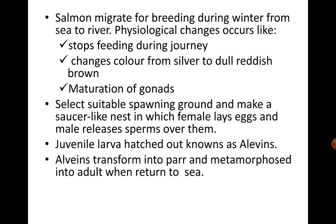Salmon migrate for breeding during winter from sea to river. Physiological changes during this migration include: they stop feeding when on the way to the freshwater habitats; colour changes from silver to dull reddish-brown; maturation of gonads takes place, preparing them for spawning. Once they reach the fresh water grounds, they select a suitable spawning ground and make a saucer-like nest or pit in which the female lays eggs and the male releases sperms over them. The juvenile larva when it hatches is known as alevins, which transform into parr and metamorphose into adults when they return to the sea.